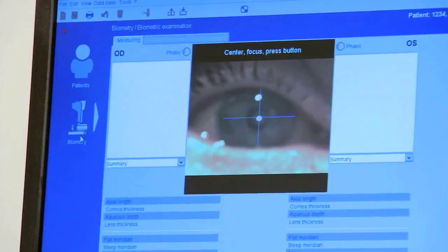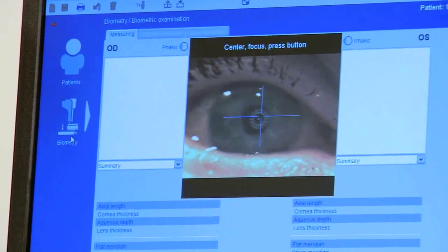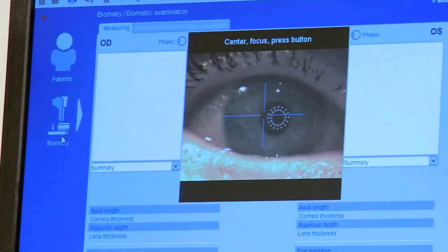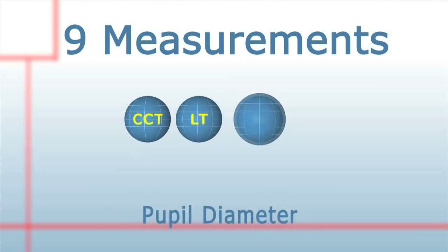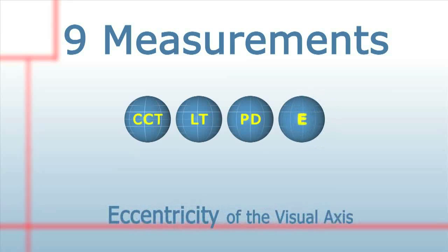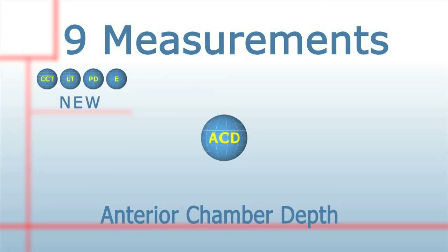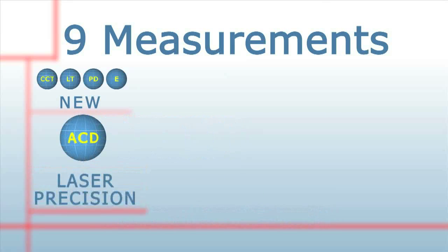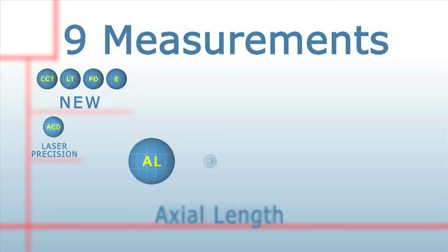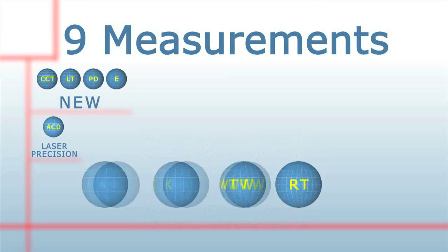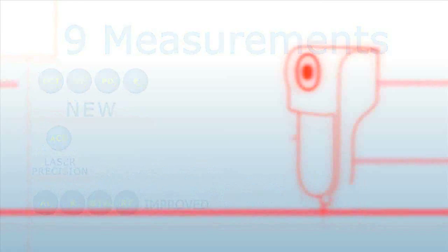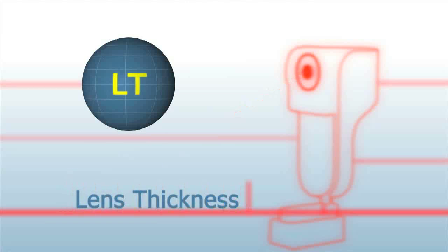This lesson will primarily focus on lens thickness, the most important breakthrough of the four new measurements of the LensStar system. LensStar's new capability to measure lens thickness optically and the improved precision of its ACD measurement are key differentiators from previous optical biometers.